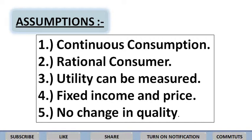Second assumption: the consumer is assumed to be rational in nature. Number three: utility is measurable in numbers like 1, 2, 3, 4, etc., and a consumer can express his satisfaction in quantitative terms. Number four: it is assumed that the income of the consumer and the price of goods and services remains unchanged during the period of consumption — याने income और commodity का price fix और unchanged होना चाहिए।